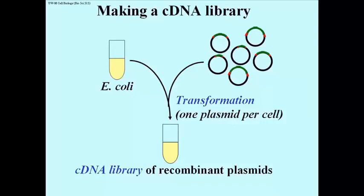So what you end up with is a tube full of E. coli cells, each with a different plasmid in it. Now there's obviously redundancy here — there are many cells that have taken up versions of the same recombinant plasmid. But the bottom line is there are millions of cells here. That's your library.